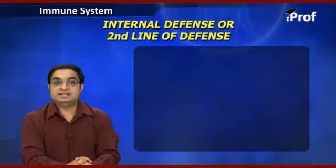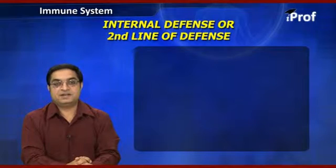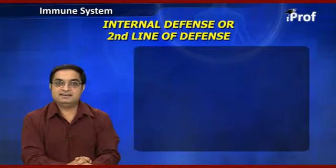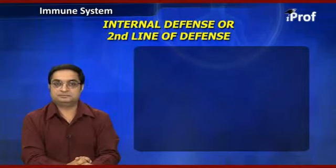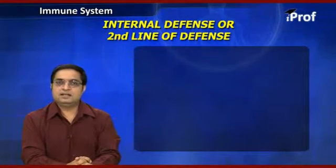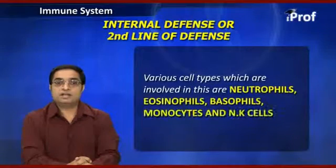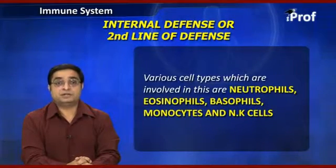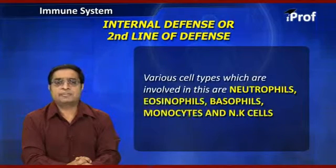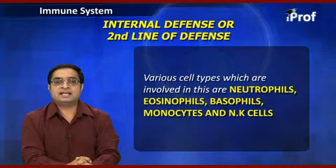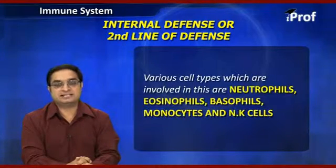Next we are going to study the internal defense, or the second line of defense. Let us see the various cell types which are involved. These are neutrophils, eosinophils, basophils, monocytes, and NK cells, or the natural killer cells.